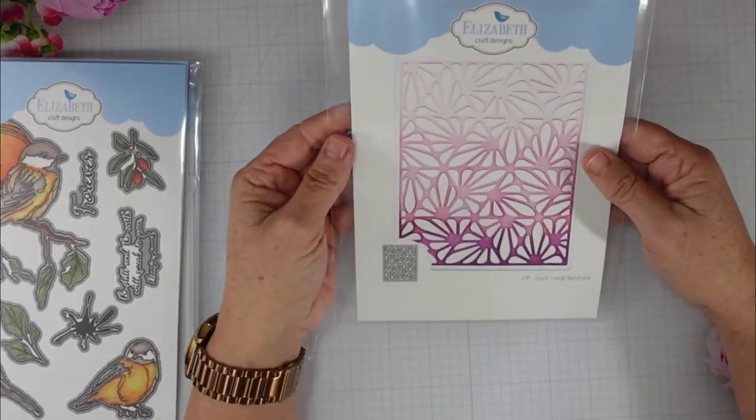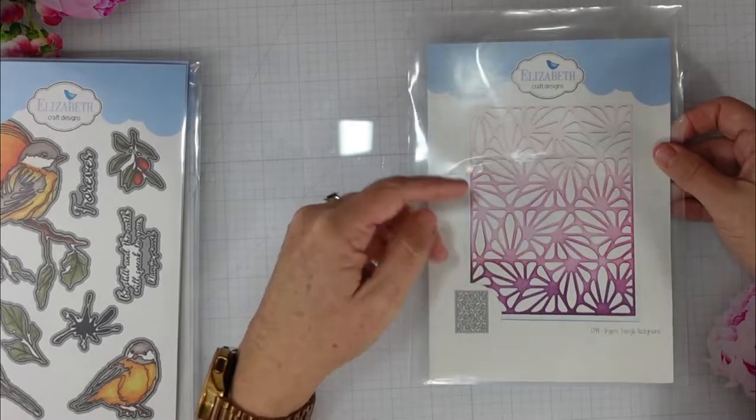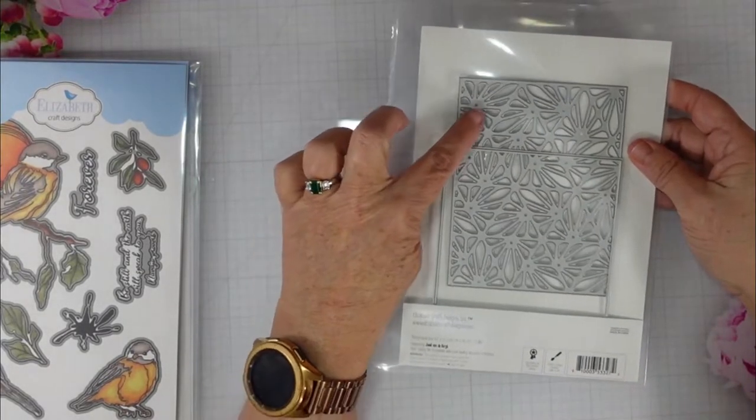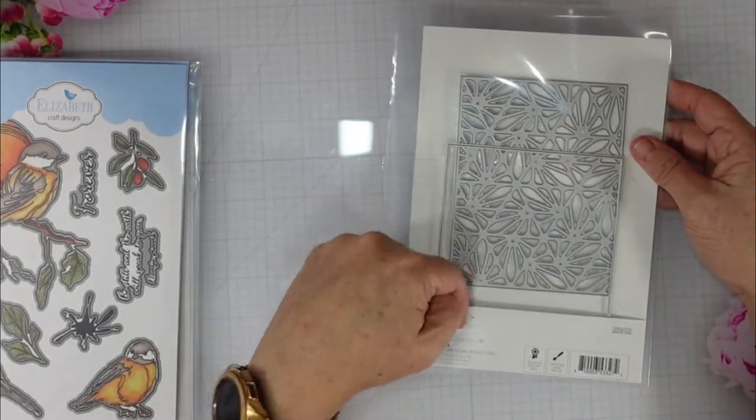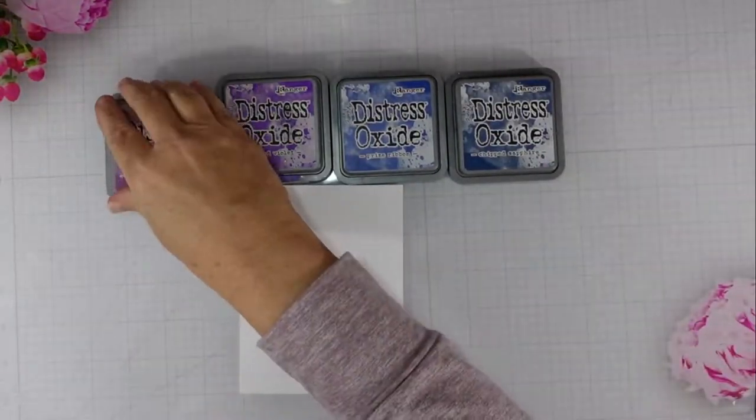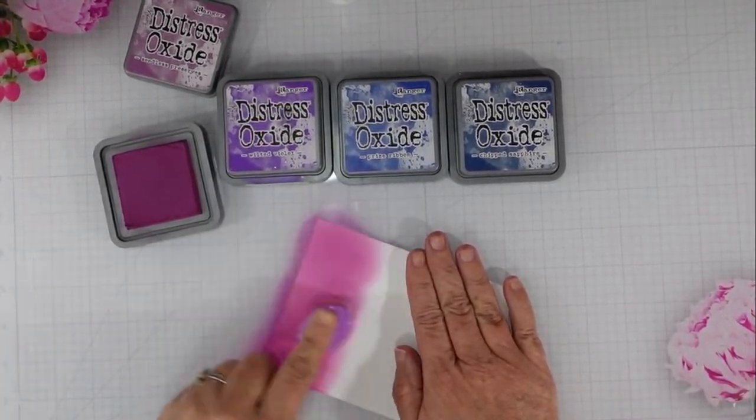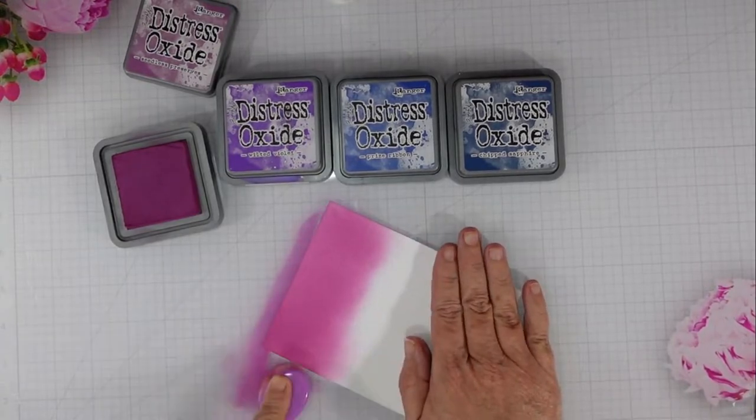I'll be using that sentiment which comes from the Forever stamp set, and then this is called Organic Triangle Background. I wanted to show you that there is a die that you put around the edge and that will allow you to cut out the panel. Instead today I'm going to be using this as an embossing folder.